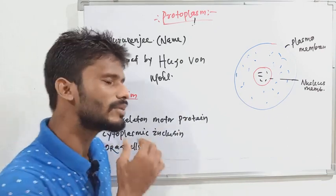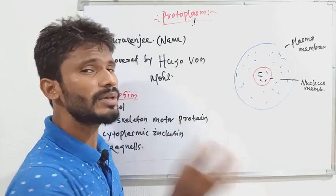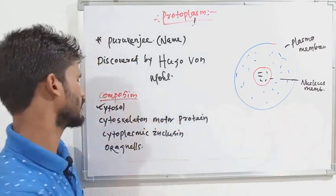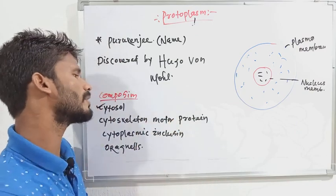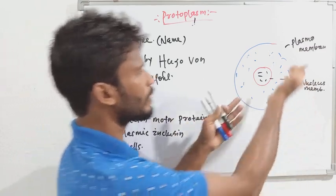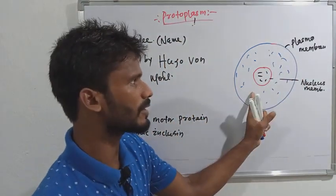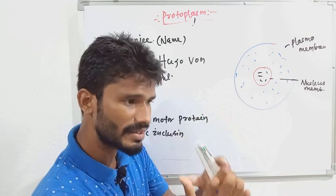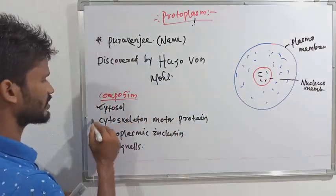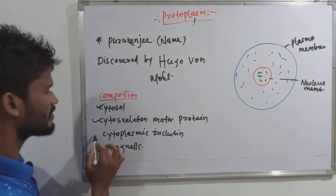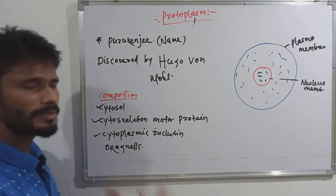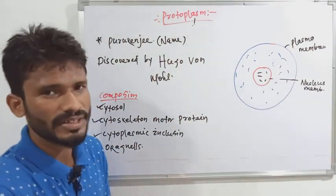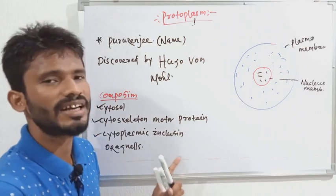The protoplasm also has a solid percentage. It contains organic, inorganic compounds, and enzymes — all called cytosol. The composition also includes cytoskeleton proteins, cytoplasmic inclusions — which are biomolecules like proteins, carbohydrates, enzymes, etc. — and organelles such as mitochondria, endoplasmic reticulum, and others.